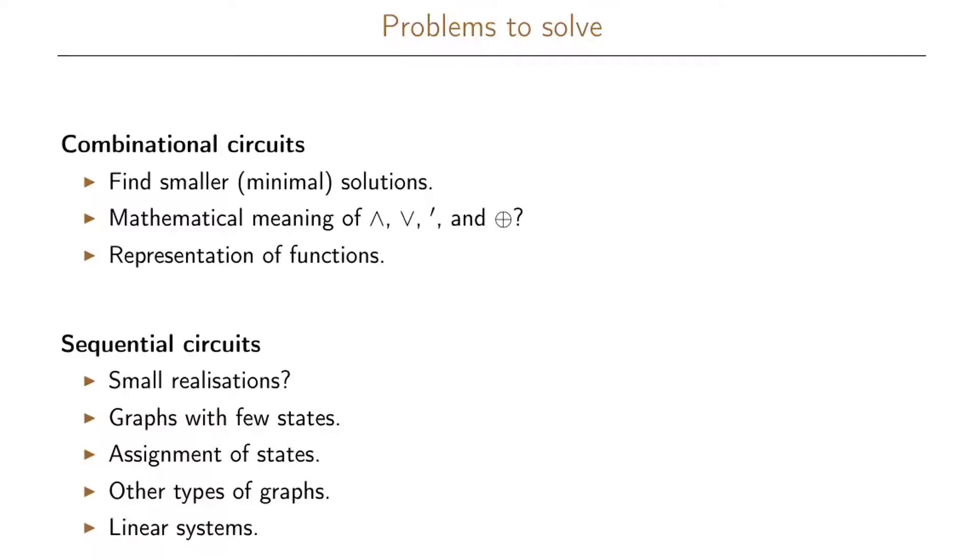And we will see that in certain cases we will be able to minimize the number of states if we have accidentally made a state transition graph with too many states.